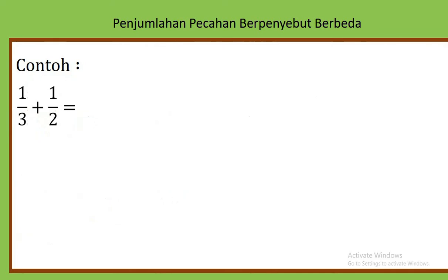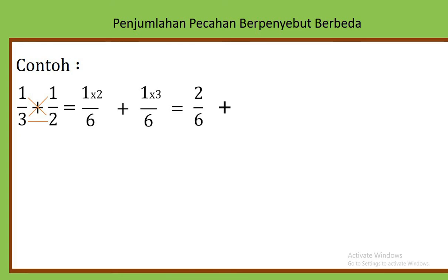Ini merupakan cara dasar mencari kelipatan. Memang prosesnya agak lama ya. Tapi ibu juga memberikan cara cepatnya. Untuk 1 per 3 ditambah 1 per 2, anak-anak bisa kalikan silang namanya. 3 kali 2 berapa? 6. Berarti sama-sama dijadikan 6. Cara cepat ini bisa digunakan kalau anak-anak sudah paham.